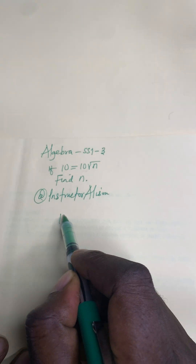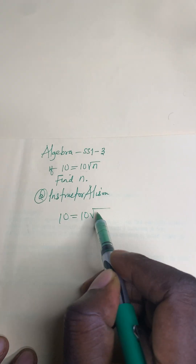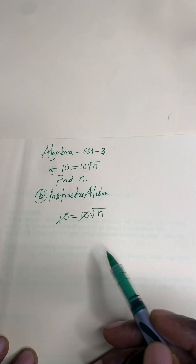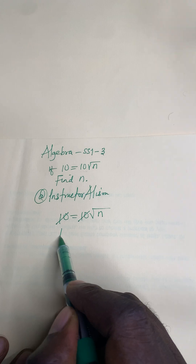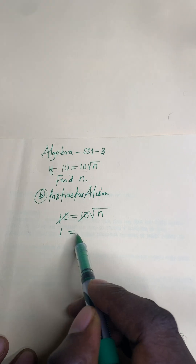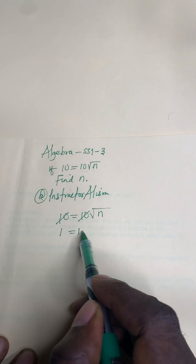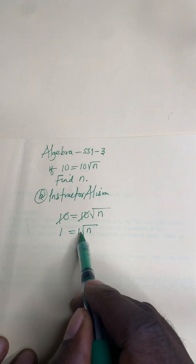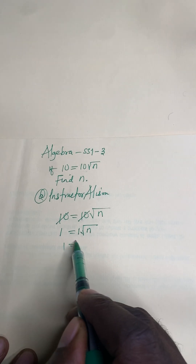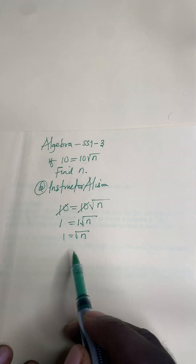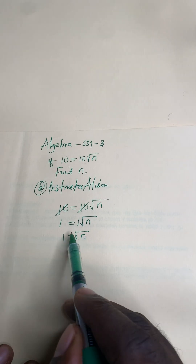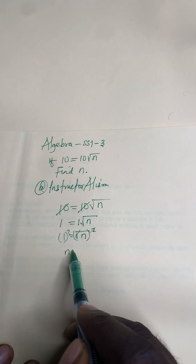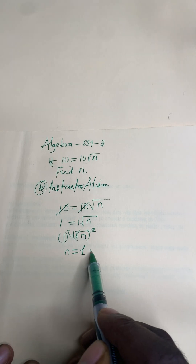See if you can solve this question: 10 equal to 10 root n. Don't let anybody waste your time — just carry this one, cancel this one. If you cancel one, one remains — it is not zero. So n times the square root of n times one will still give you the square root of n. To remove the square root, just square both sides. This one and this one will cancel, and n will be equal to one squared, which gives you one.